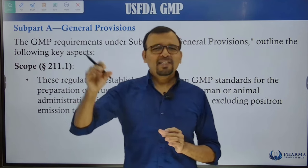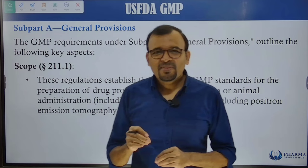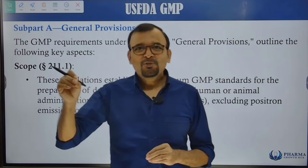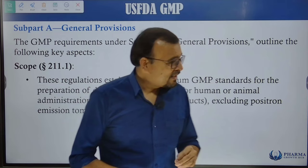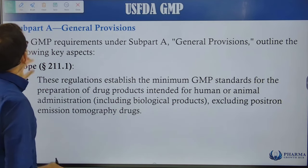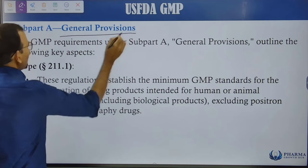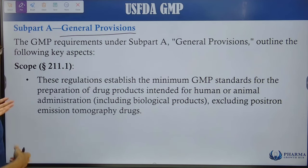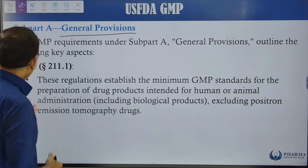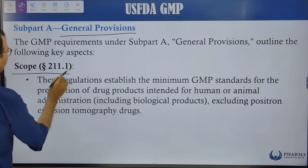The subparts go from A to K. In Subpart A we can understand the general provisions. The GMP requirements under Subpart A talk about the scope.